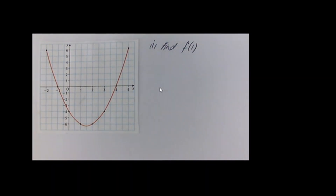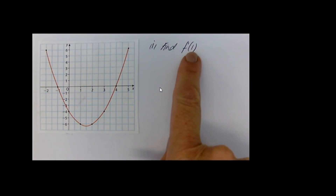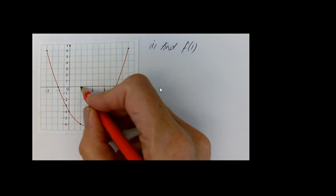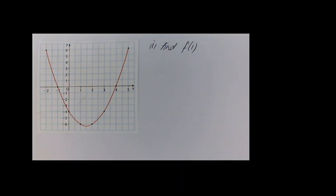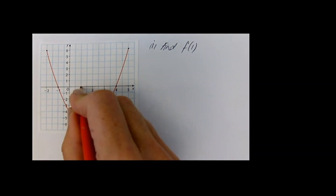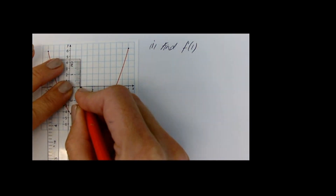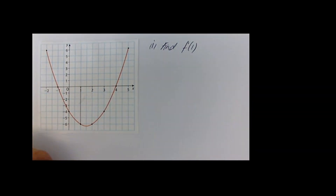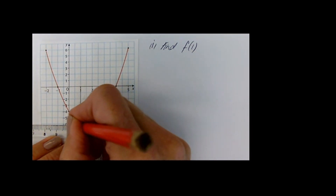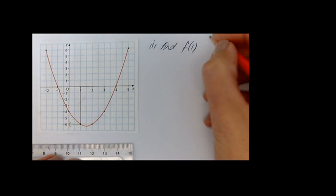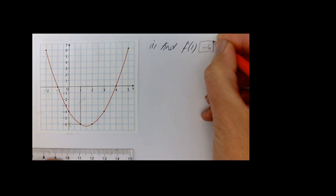Let's take a look at this question. We're asked to find f of 1 — again, 1 is replacing the x, so we're going to go to 1 on the x axis. When you go to the x axis, you always draw a vertical line to meet the graph. Since we went to the x, we'll be reading off the y. That answer is minus 6.